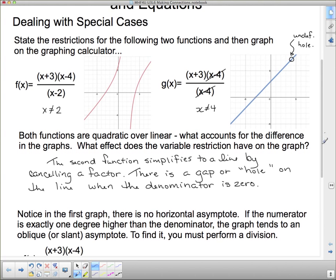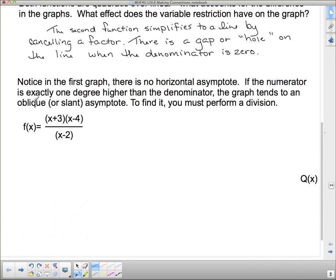Now notice in the first graph there's no horizontal asymptote. If the numerator is exactly one degree higher than the denominator, the graph tends to an oblique or slant asymptote. That is, if there's no cancellation like in this function. To find it you must perform a division.